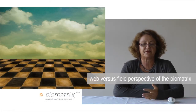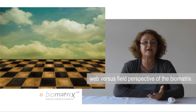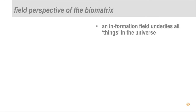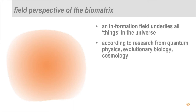Up to now we have looked at the biometrics from a web perspective — a web of different types of systems and different sub-webs. Now there is also an information field perspective. There is a universal information field that underlies all things or all systems in the universe, depicted as a big orange field. There is growing research from quantum physics, evolutionary biology, cosmology, and consciousness suggesting that such a field exists and that its function is to inform — or put form into — the systems as they unfold. The word information comes from the Latin informare, meaning to put form into things.